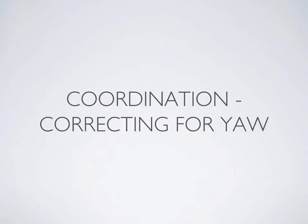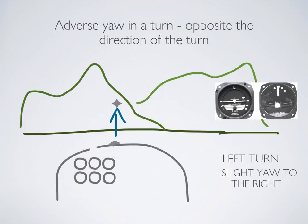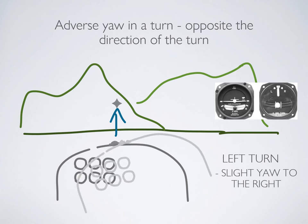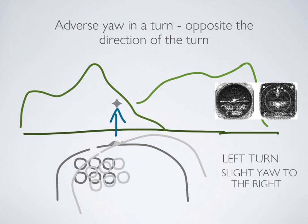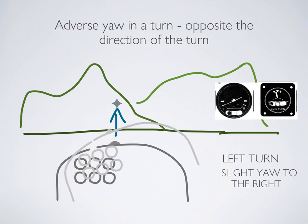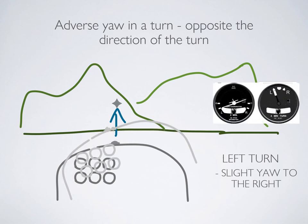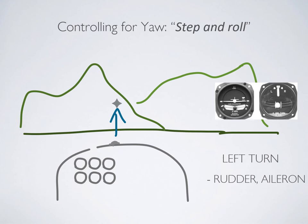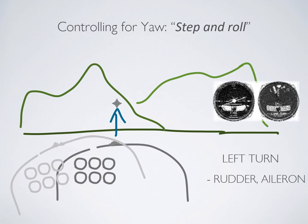Let's talk about coordination and correcting for yaw. When you use ailerons to put your aircraft into a turn, the aircraft will momentarily yaw in the opposite direction before eventually catching up with the turn. To counteract this, we sometimes say "step and roll," which is a reminder to add rudder input to counteract the yaw and to coordinate the aircraft into the turn.